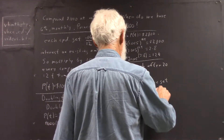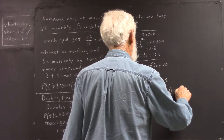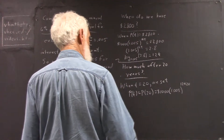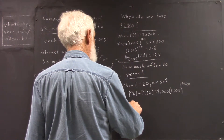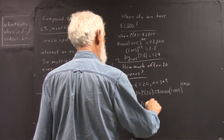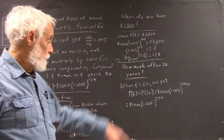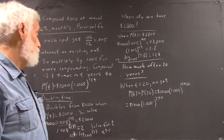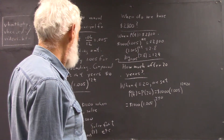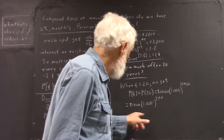That's going to be $1,000 times 1.005 raised to the 12 times 20, which equals $1,000 times 1.005 to the 240th power. That's a pretty high power, but we simply evaluate that using the calculator.